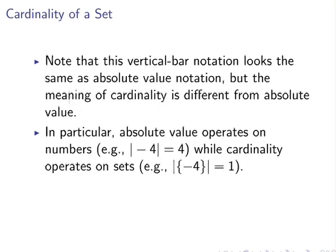Just a quick remark about the vertical bar notation. It looks the same as absolute value notation that you might know from numbers. The meaning of cardinality is entirely different in this case. For example, if we have the absolute value of minus 4, that is equal to 4.